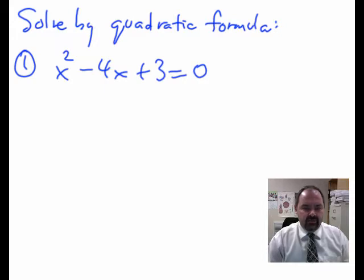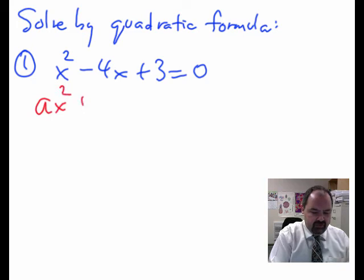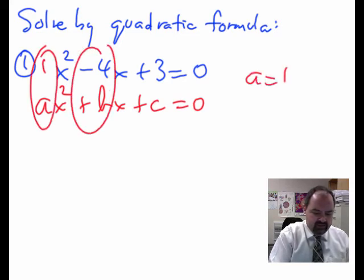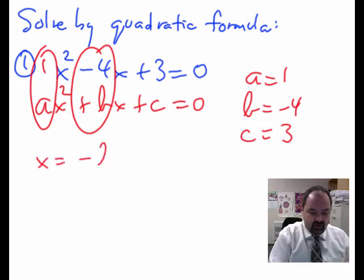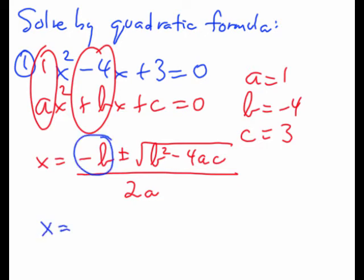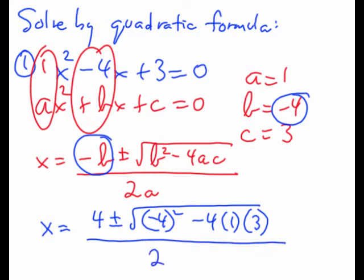Let's do a couple of examples of solving a quadratic equation by the quadratic formula. I have a quadratic equation in general form ax squared plus bx plus c equaling zero, and the coefficients are a, b, and c. So a is 1, b is negative 4, and c is 3. I can use the quadratic formula to get the values of x that make that equal to zero. Substituting those in: x equals negative b — the opposite of negative 4, which is positive 4 — plus or minus b squared, which is negative 4 bracketed squared, minus 4 times a, which is 1, times c, which is 3, all divided by 2 times a, which is 1.